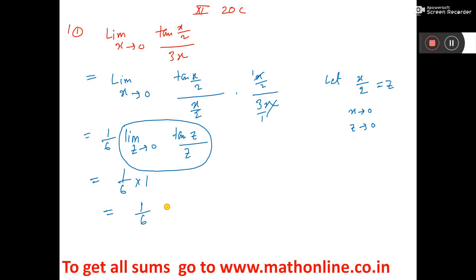So the answer is 1 by 6. Which formula I applied here? Limit x tends to 0, tan x by x is equal to 1. This formula I have applied here. That's all.